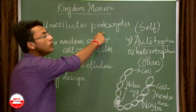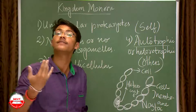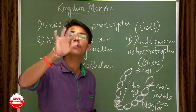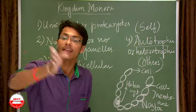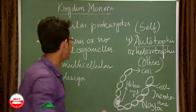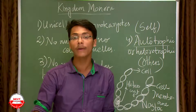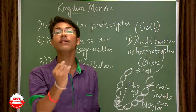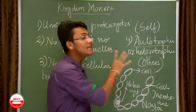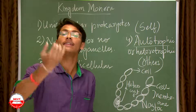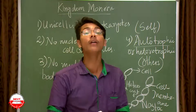To summarize the first four points: they are unicellular prokaryotes with only one primitive cell. There is no nucleus or cell organelles, and they have no proper chromosomes — the genetic material is suspended in the body cavity. There is no multicellular body design, meaning no division of labor. The mode of nutrition is either autotrophic or heterotrophic.